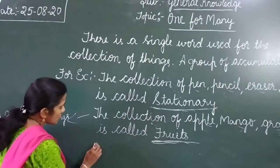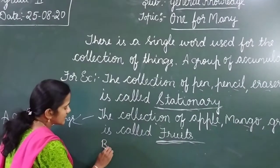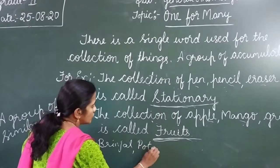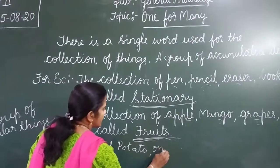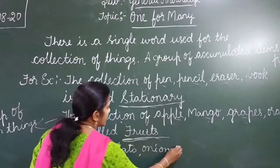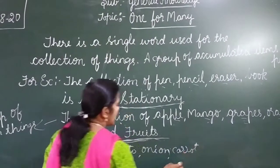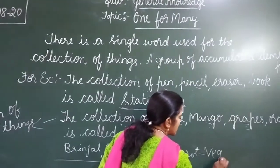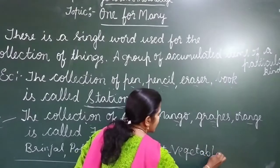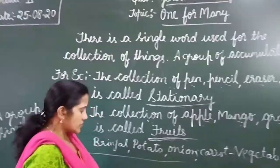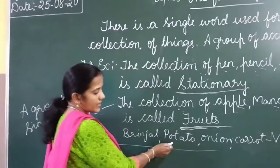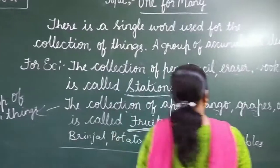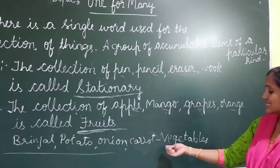For example, the collection of brinjal, potato, onion, carrot — what do we call them as? It is vegetables. So it is a single name. We call them as vegetables.